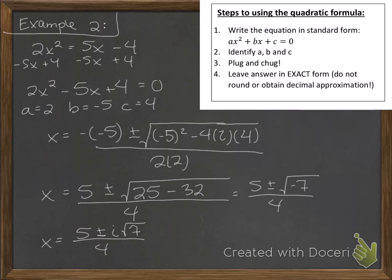Now if you're doing any kind of work where you want the two solutions, you can write the plus solution as 5 plus i root 7 over 4, and you can write the minus solution as 5 minus i square root of 7 over 4.